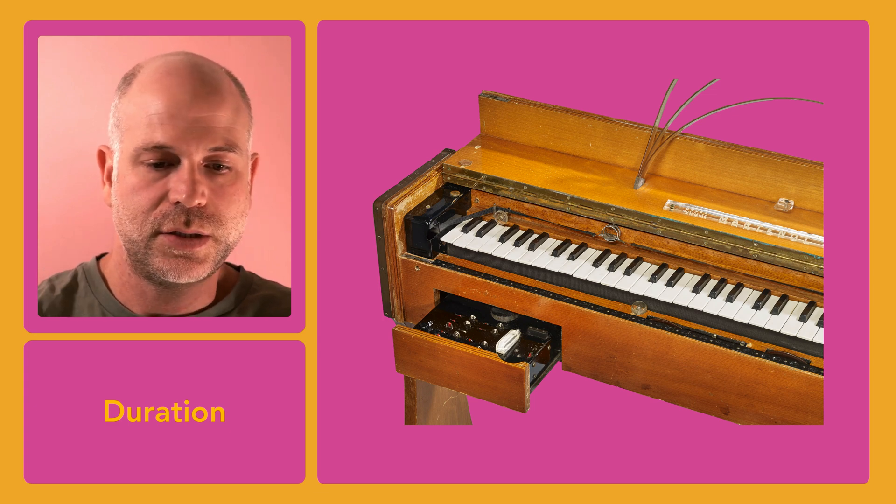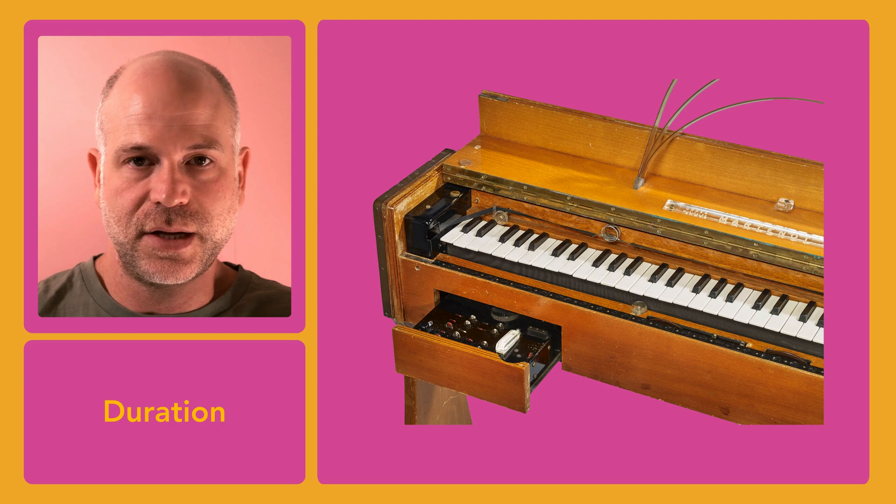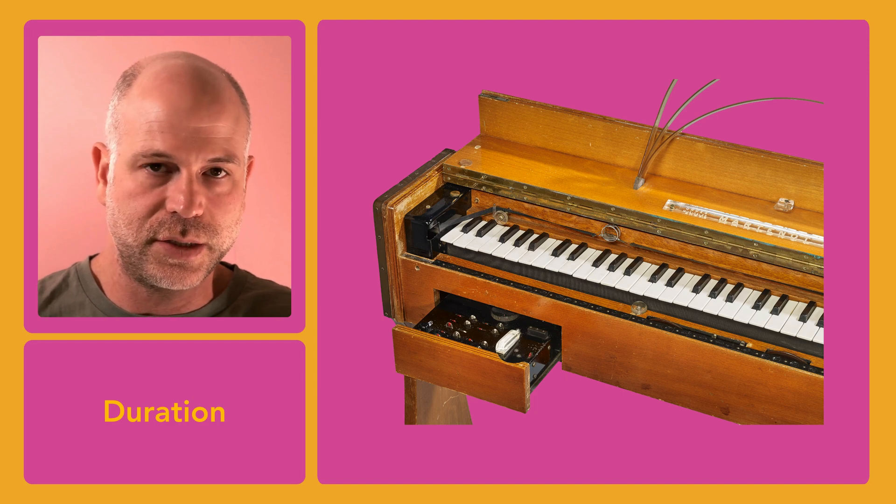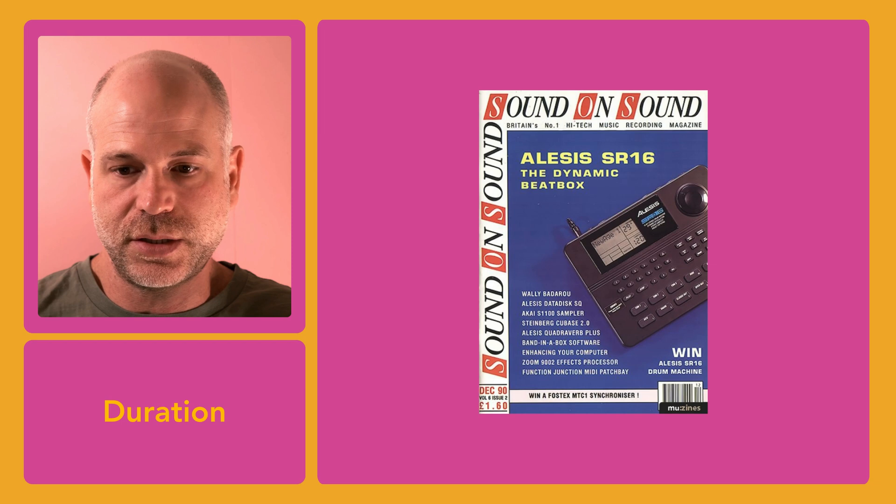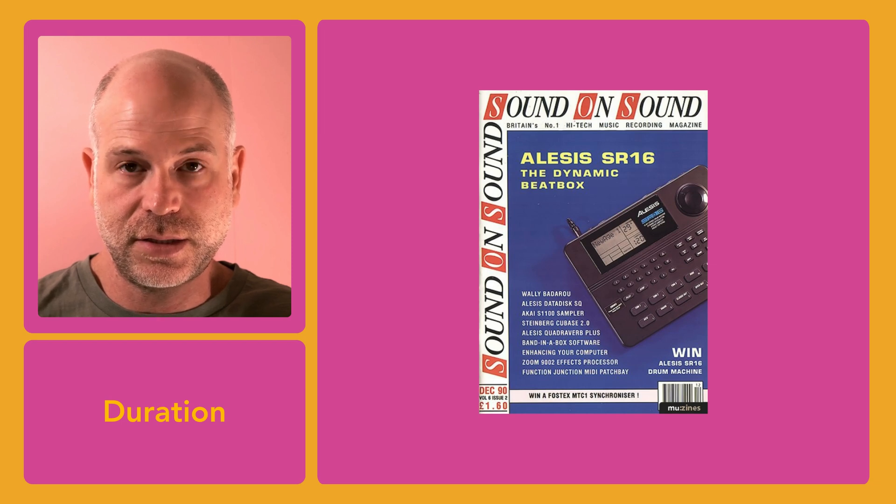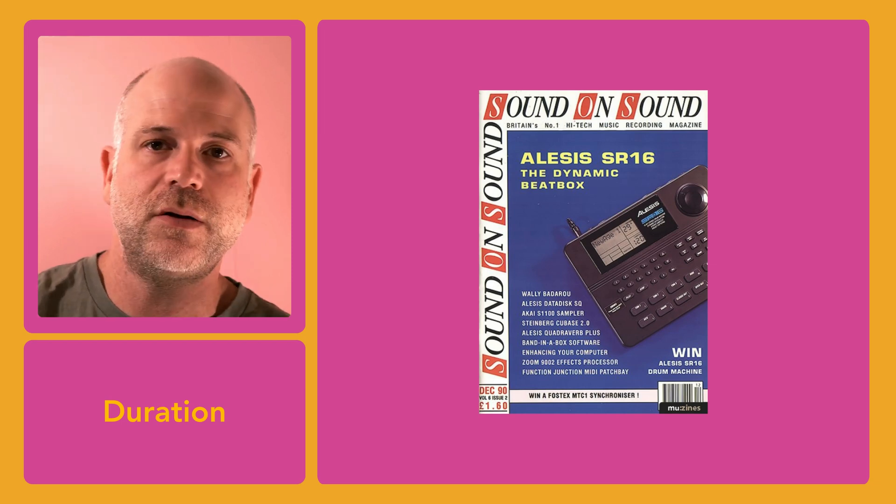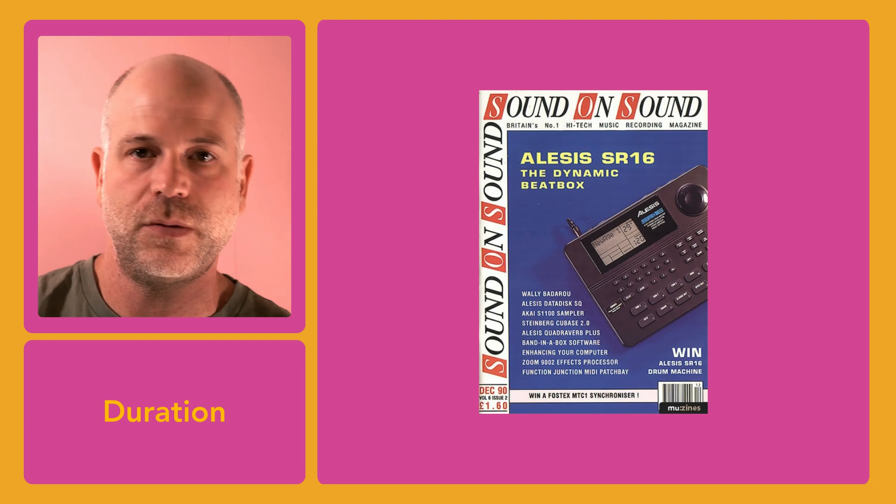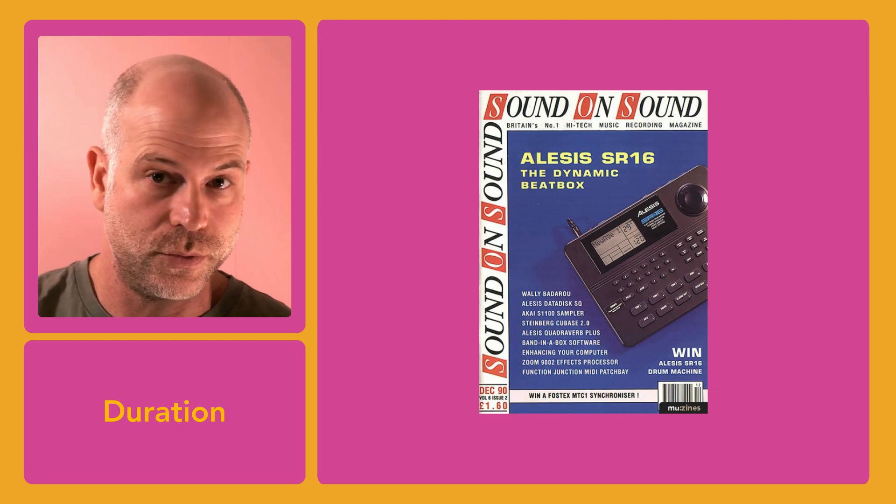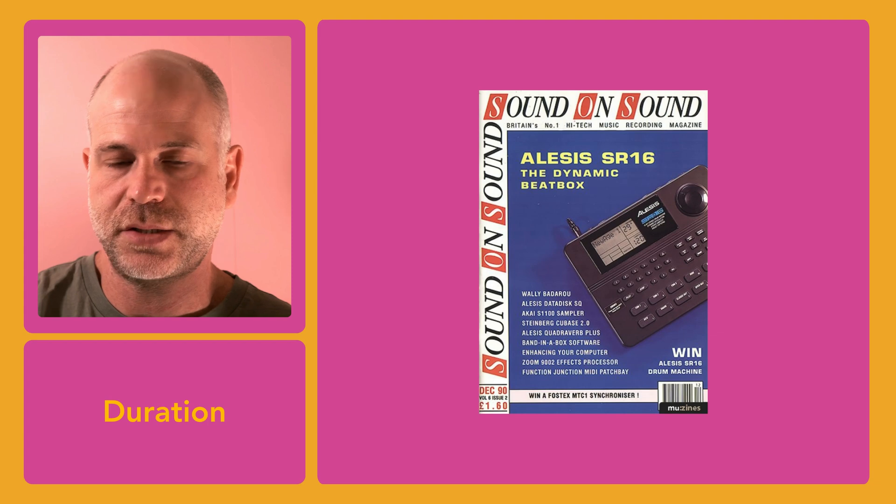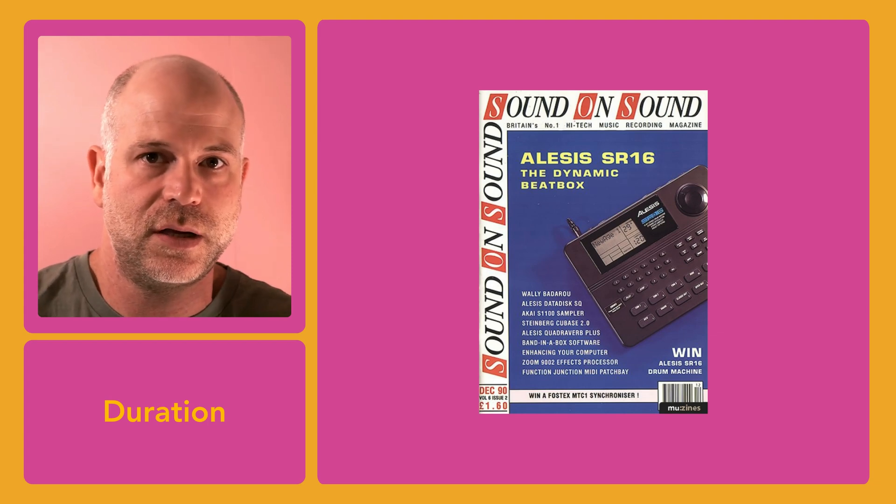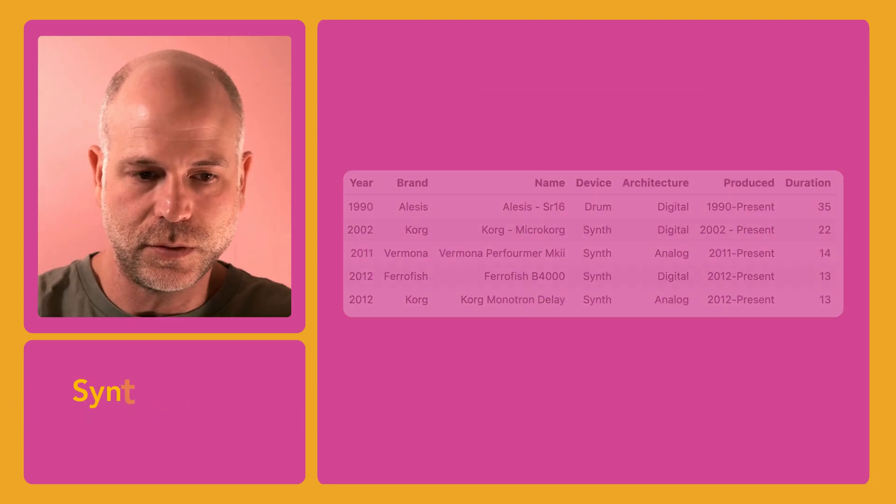However, as exotic as it might be, I find the next entry to be quite surprising. The Alesis SR16 drum machine, which was first released in 1990, and it's still being produced to this day. To my knowledge, it's the oldest widely commercially available instrument that you can still buy new. According to my readings online, Alesis even claims it's one of the best-selling drum machines, which makes sense given the fact that it's being produced for so long.